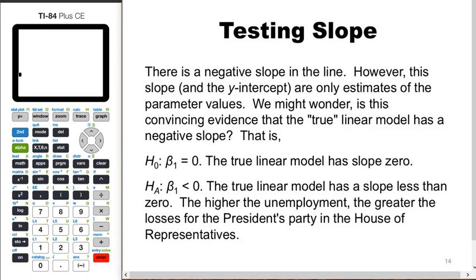We might wonder if this is convincing evidence that the true linear model has a negative slope. The null hypothesis is that β₁ equals zero, meaning the true linear model has slope zero — essentially that unemployment rate has nothing to do with the president's gains or losses. The alternative hypothesis is that β₁ is less than zero: the true linear model has a slope less than zero, meaning the higher the unemployment rate, the greater the losses for the president's party in the House of Representatives.